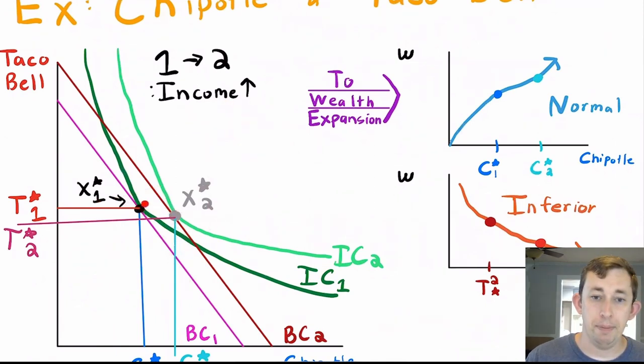So this is my optimal bundle in the baseline, and then this is my optimal bundle when my income has gone up. All I've done is because my income has gone up, my budget constraint has shifted out, but the prices have stayed the same, so the slope is still the same.